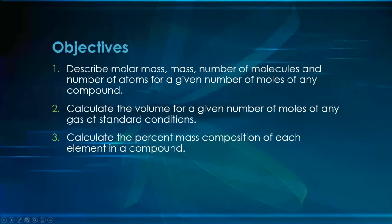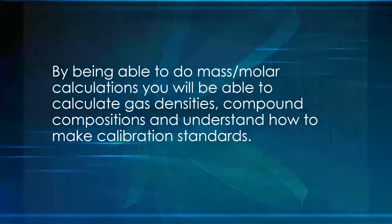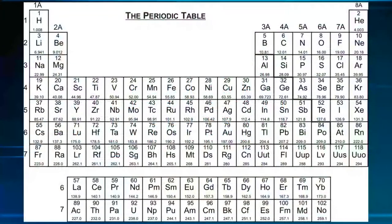Most of this ILM is math. Why do we need to do this? By being able to do mass or molar calculations, you'll be able to calculate gas densities, compound compositions, and understand how to make calibration standards. The pivot point for today is the periodic table of elements, particularly this one that has the atomic mass numbers on them. These are the numbers that one mole of this element weighs. All of these numbers here are the molar mass for one mole of that particular substance. These are the numbers that we're going to be using today.